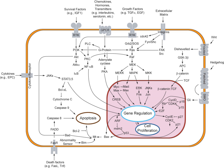Errors in signaling interactions and cellular information processing are responsible for diseases such as cancer, autoimmunity, and diabetes. By understanding cell signaling, diseases may be treated more effectively and, theoretically, artificial tissues may be created. Systems biology studies the underlying structure of cell signaling networks and how changes in these networks may affect the transmission and flow of information. Such networks are complex systems in their organization and may exhibit emergent properties including bistability and ultrasensitivity. Analysis of cell signaling networks requires a combination of experimental and theoretical approaches including the development and analysis of simulations and modeling.